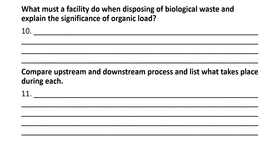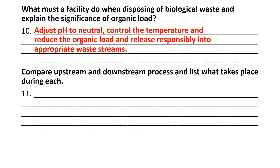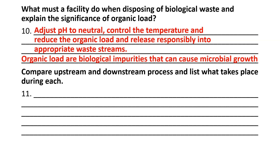The short answer question asks: what must a facility do when disposing of biological waste? Explain the significance of organic load. When we're getting rid of biological waste, we have to make sure it's dead — it cannot be alive. To do that, we adjust the pH to neutral, usually after raising the pH really high to base levels to kill anything living. We control the temperature — we don't want it too hot, as that will de-oxygenate water. And we reduce the organic load by getting rid of these materials, which could act as food for algae blooms and other microbes.